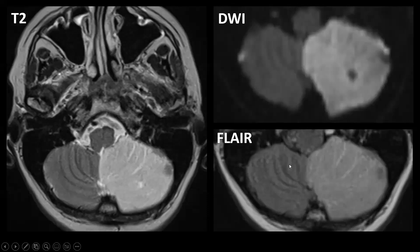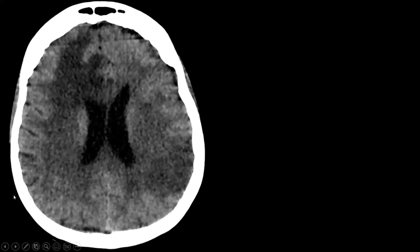MRI findings in another patient with a PICA infarction show T2 and FLAIR oedema of the left cerebellar hemisphere with diffusion restriction. In another patient with acute aphasia and an oncological history, there are areas of oedema — the question is: what is due to brain tumour and what is ischemic stroke? Is everything tumour? Is everything stroke? Hard to tell — or is it?